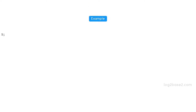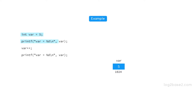Let us see an example. We have a simple code here. We are declaring an integer variable var and initializing it to 5. Now we are printing the value of var, so it will print 5. Then we have var plus plus, which will increment the value of var and it will become 6. Now we are printing the value of var again, and this time it prints the incremented value 6.